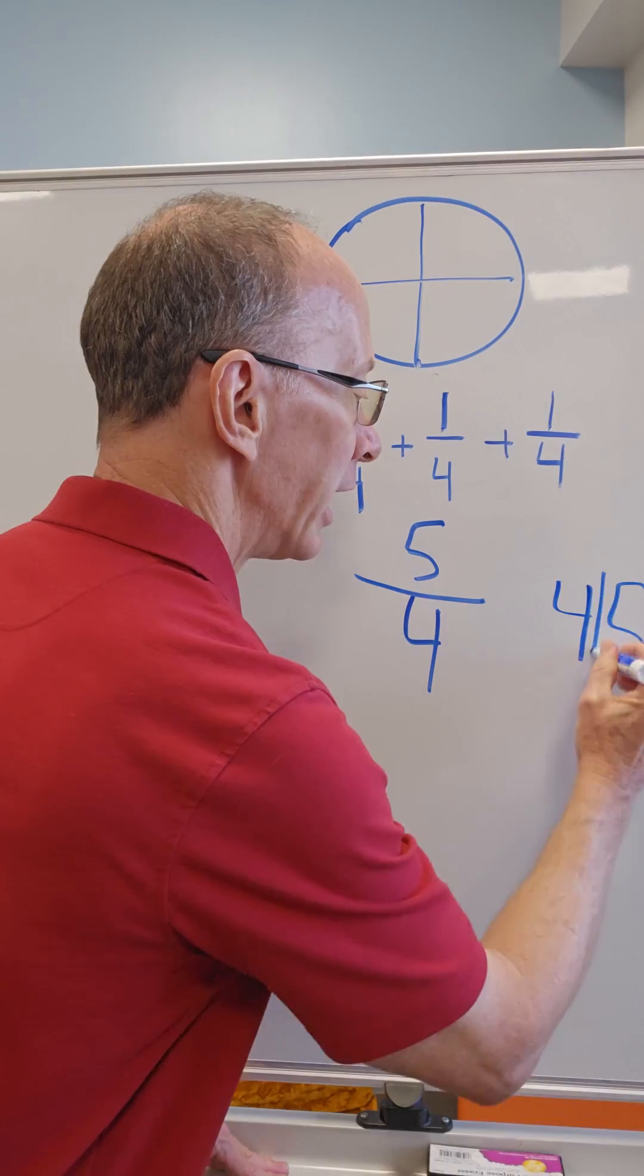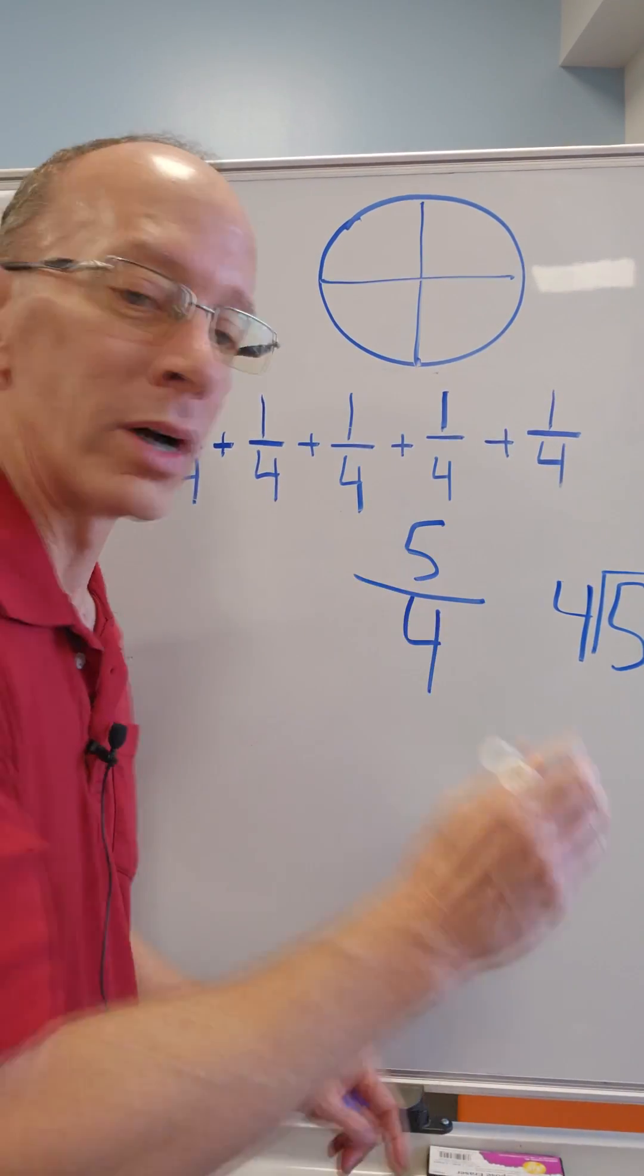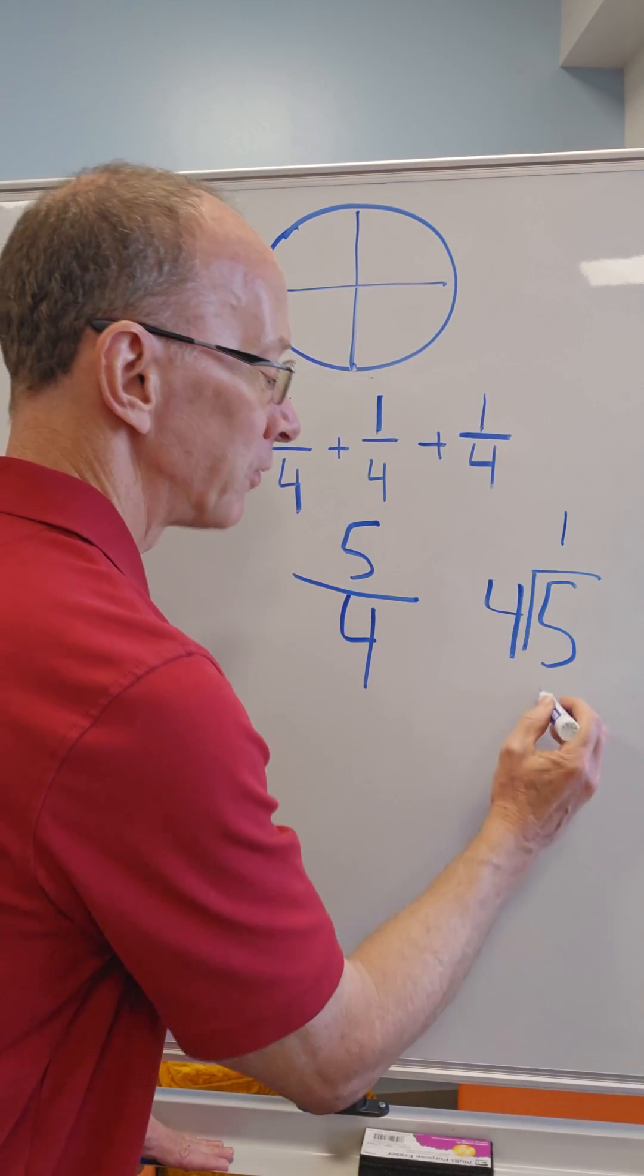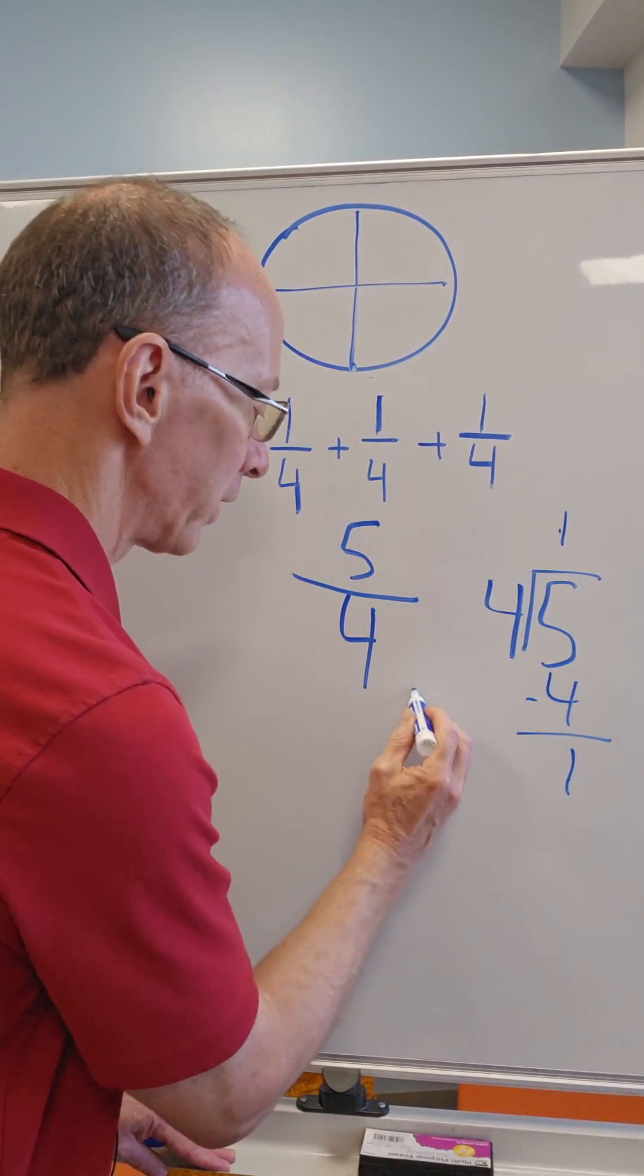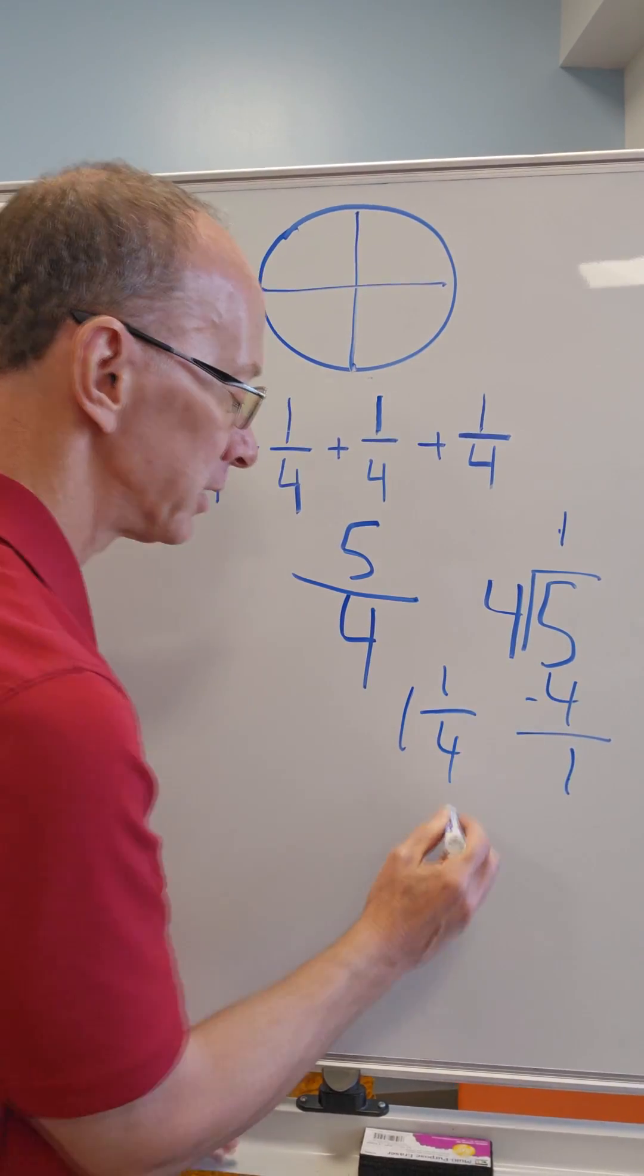How do you do that? Divide. How many times does four go into five? One time. Can you see that board? I'm going to move it over here. One times four is four with a remainder of one. So that is one and one-fourth. So you have one pizza and one-fourth.